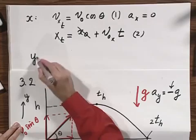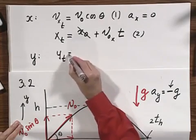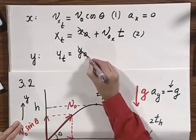Then in the y direction, I have that y as a function of time would be y zero, which I also choose zero,